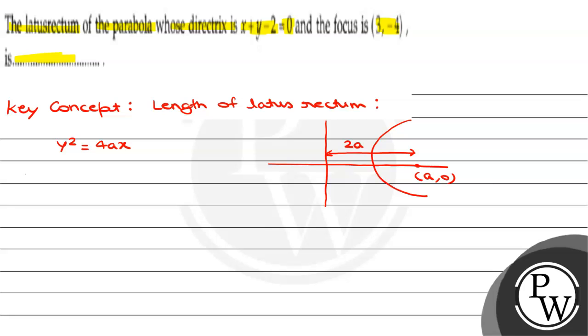Now, coming to the length of the latus rectum. What is the length of the latus rectum? That is equal to 4a. This means, if we find this value of a, then we can easily find out the length of the latus rectum, which is equal to 4a.